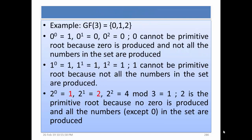This will be clear with an example. Suppose we are talking about GF(3) and the elements of GF(3) are 0, 1 and 2. First, let's test 0. 0 raised to power 0 is equal to 1, 0 raised to power 1 is equal to 0, and 0 raised to power 2 is equal to 0. So 0 cannot be a primitive root because 0 is produced and not all the numbers in the set are produced.